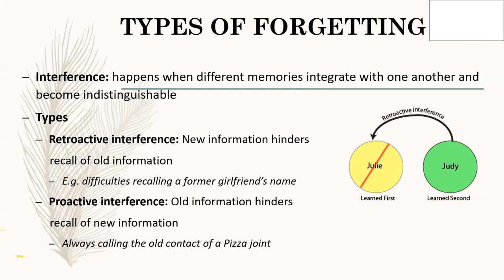The next cause of forgetting is interference. Sometimes old information and new information that we've learned can impede our ability to recall other information. When this happens, we call it interference. We have two types: retroactive interference and proactive interference.